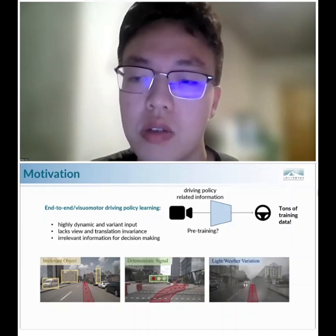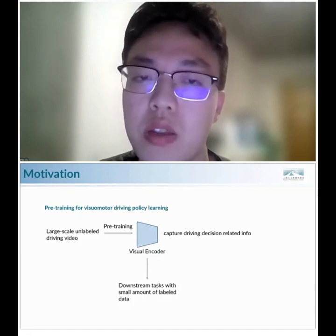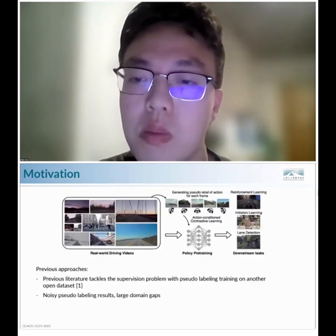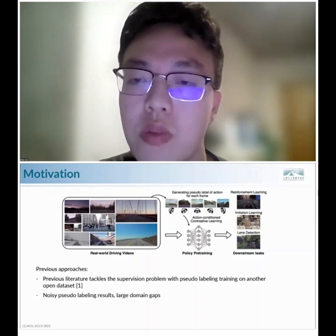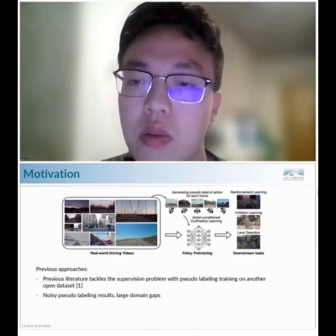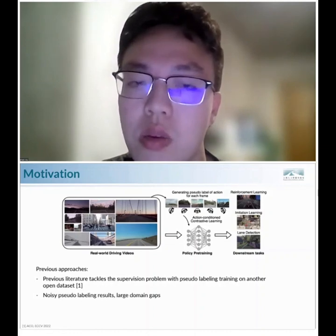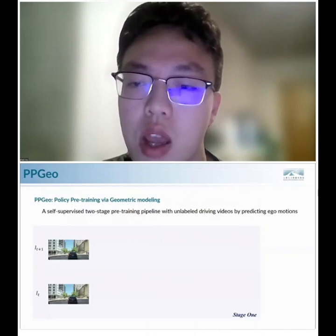For example, irrelevant objects like buildings often dominate the visual input while safety-critical signals like traffic lights occupy only a small region. The model must also be robust to varied lighting and weather conditions. Previous work pre-trained visual encoders in a contrastive learning framework with pseudo steering-angle labels, but pseudo-labeling suffers from noisy predictions — especially with domain gaps between labeled and large-scale unlabeled data. We aim to design a more direct learning objective without pseudo-labels or extra datasets.